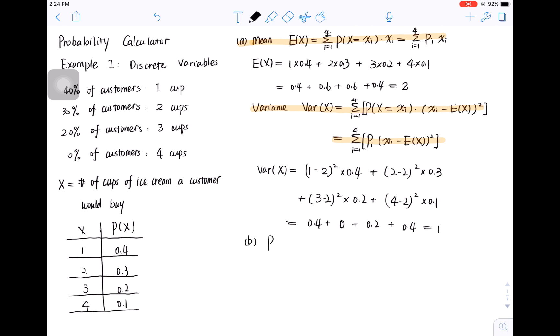For question B, it is the probability of x greater than or equal to 2. That means x could be 2, 3, or 4. We just need to add up the probabilities corresponding to these three numbers. That is 0.6.